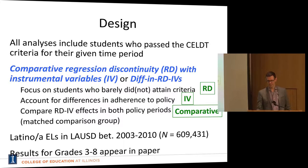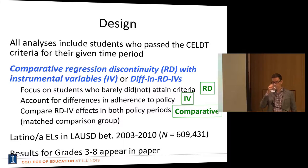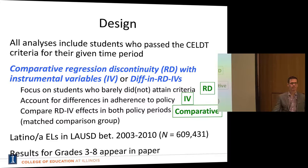When you compare before and after, the complier populations would be different between periods and might have unobserved differences related to teacher observations. Should I be concerned about that in terms of the difference between the two periods?